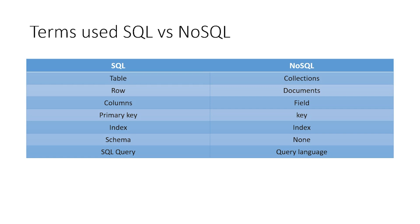In SQL, there is no inbuilt indexing. In SQL, you use a schema-based language. In MongoDB, you can use a schema-less language.